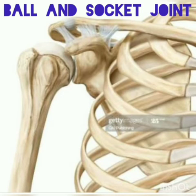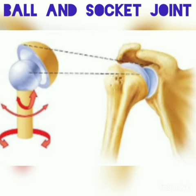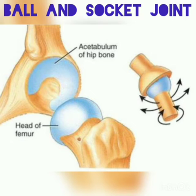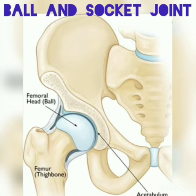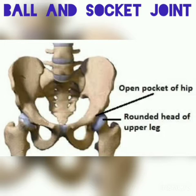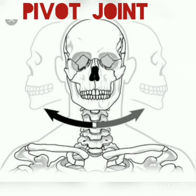Ball and socket joint. The shoulder joint allows us to move our arm in all directions. The rounded end of the humerus bone in the upper arm fits into a cup-shaped socket in the shoulder. Such joints, in which a ball-shaped end of a bone fits into the socket of another, are called ball and socket joints. The shoulder and hip joints are the only ball and socket joints in our body.